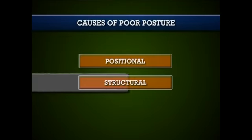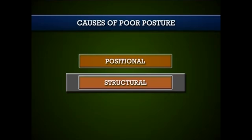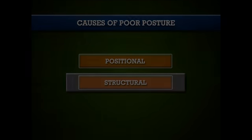The second category is structural. Structural causes are basically permanent anatomical deformities that may not be amenable to correction by conservative treatments. However, some leg length inequalities and some ankle and foot issues can be corrected conservatively.